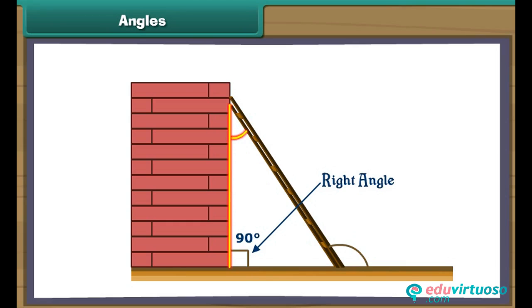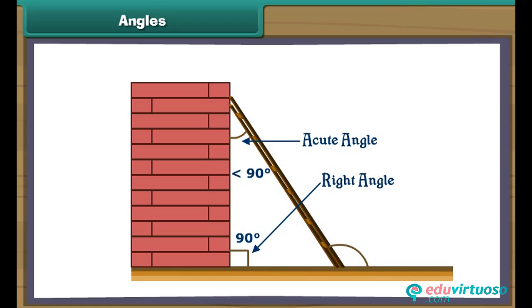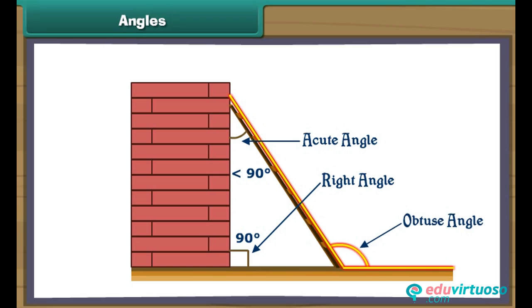Now consider the angle that the ladder makes with the wall, taking the wall as the base. The ladder is not vertical — it is tilted in. Such an angle is called an acute angle and its measure is less than 90 degrees. Now let us look at the third angle that the ladder makes with the ground. Taking the ground as the base, the ladder is tilted out — such an angle is called an obtuse angle and its measure is more than 90 degrees.